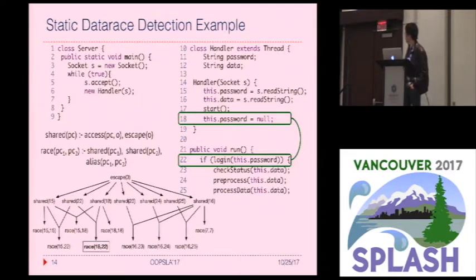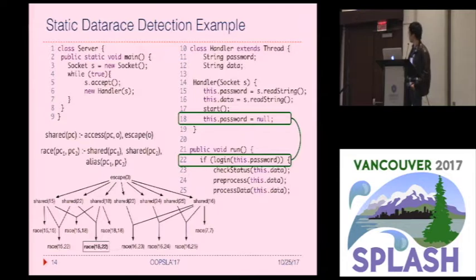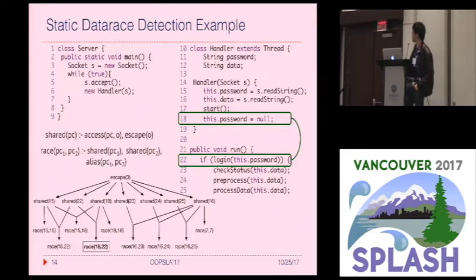For example, the edge from escape(3) to shared(15) is an instance of the first rule. And the edge from shared(15), shared(22) to race(15,22) is an instance of the second rule. Here we omit the relations including access and alias for simplification. As we can see, this analysis successfully captures the real race.